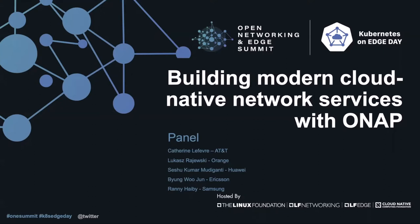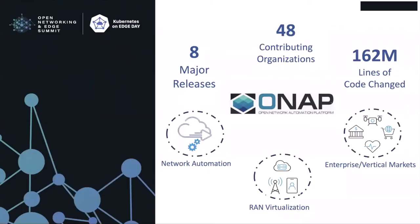Catherine, can you please remind us what ONAP is? Thank you, Rani. So the Open Network Automation Platform, code name ONAP, is a comprehensive open source platform for orchestration, management, and automation of network and edge computing services. This platform can be consumed by network operators, cloud providers, and enterprise. Founded in 2017 under the Linux Foundation umbrella, eight major successful releases have been delivered so far. The ONAP community is currently working on Istanbul, the ninth release, expected by Q4 this year.